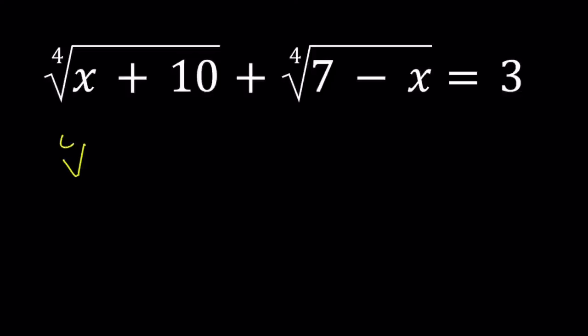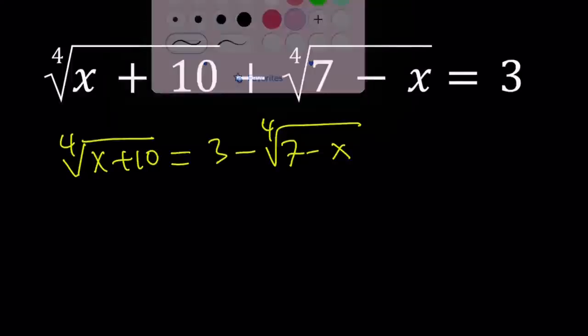So in this case, I'm going to isolate fourth root of x plus 10 and write it as 3 minus the fourth root of 7 minus x. Now, at this point, you could square both sides or you could raise both sides to the fourth power.